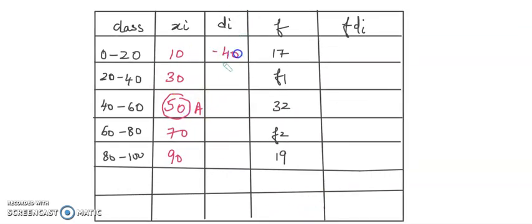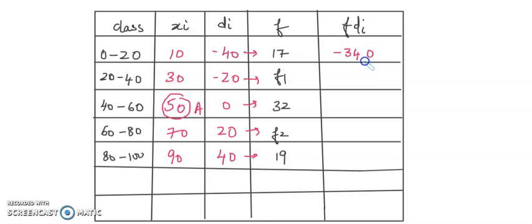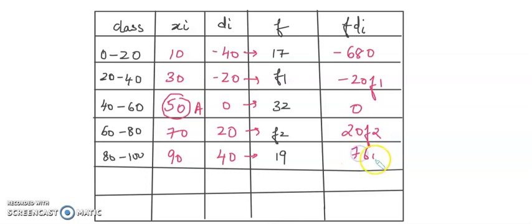Computing d_i: 10 minus 50 = minus 40, 30 minus 50 = minus 20, 50 minus 50 = 0, 70 minus 50 = 20, 90 minus 50 = 40. Multiplying by frequencies: minus 680, minus 20F1, 0, plus 20F2, and 760. So sigma f*d_i = 20F2 minus 20F1 plus 80.